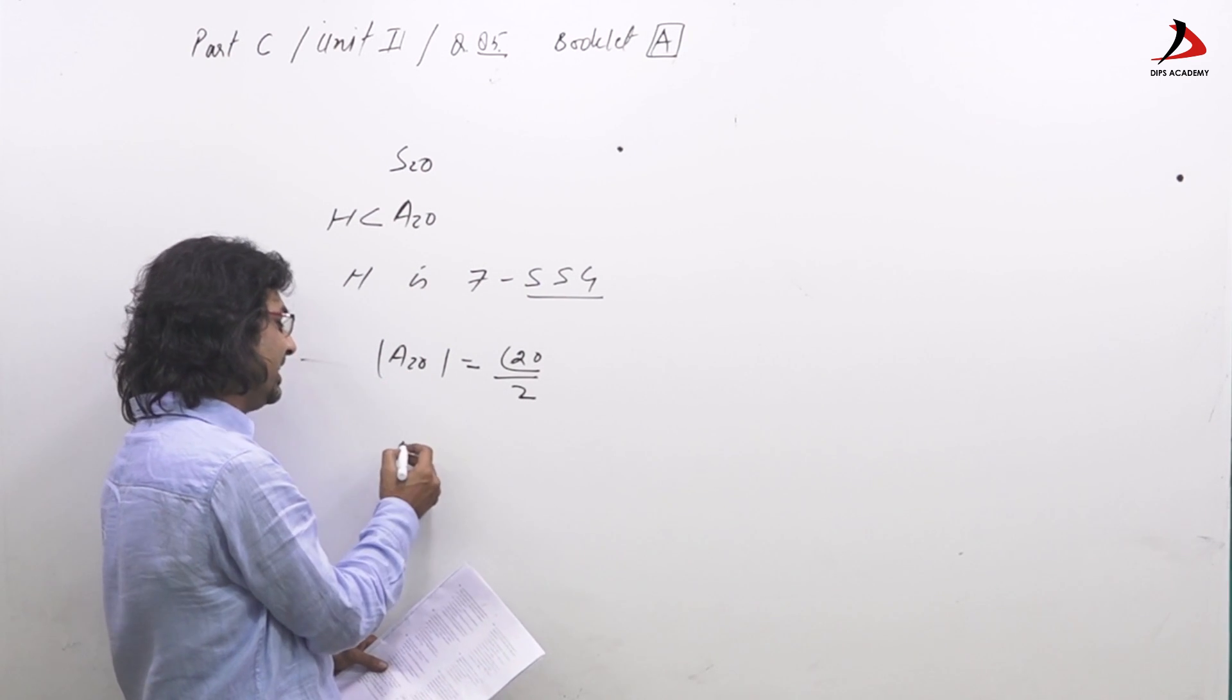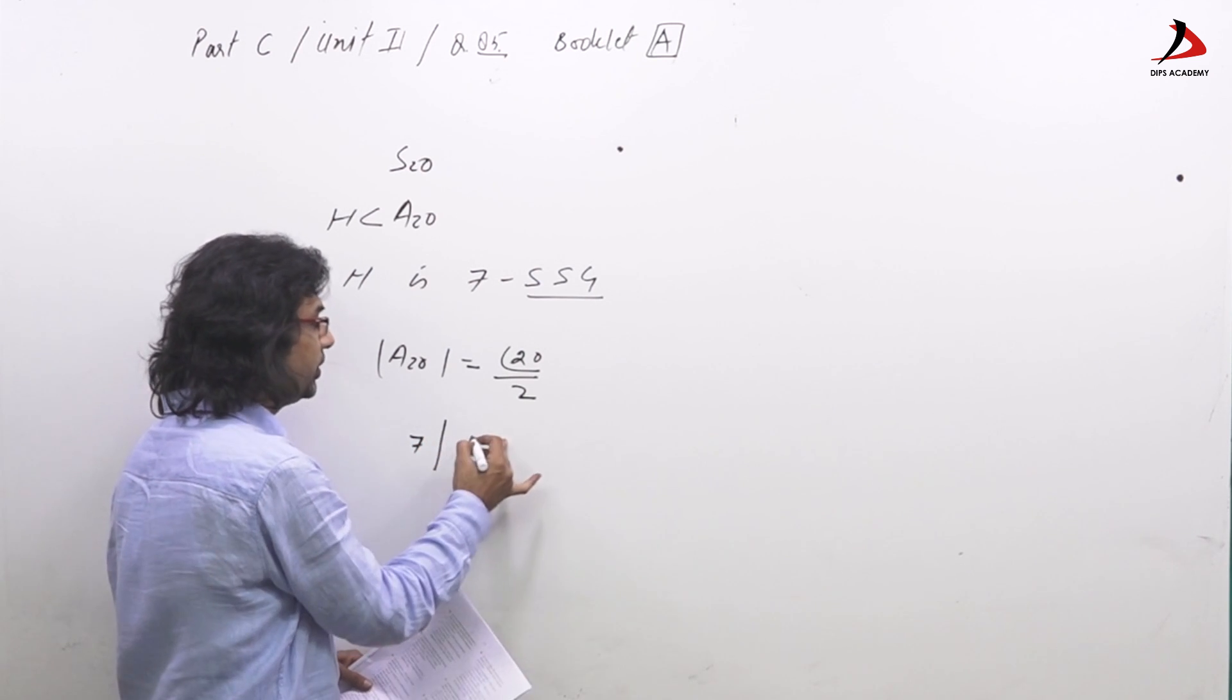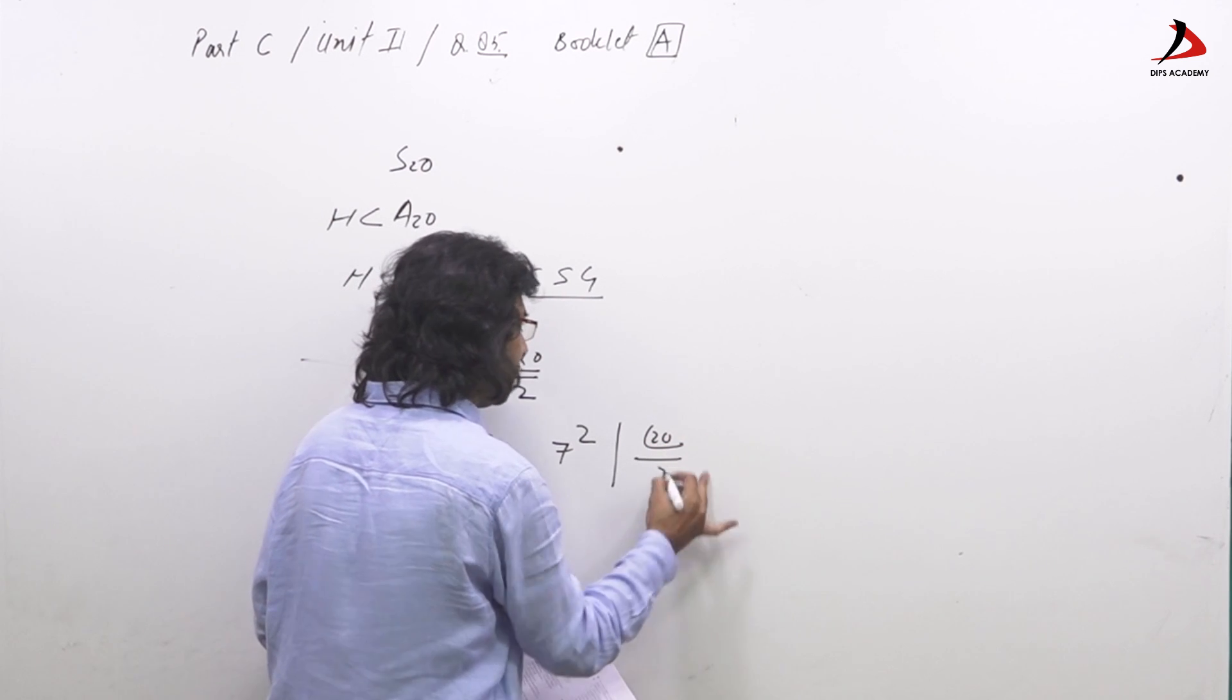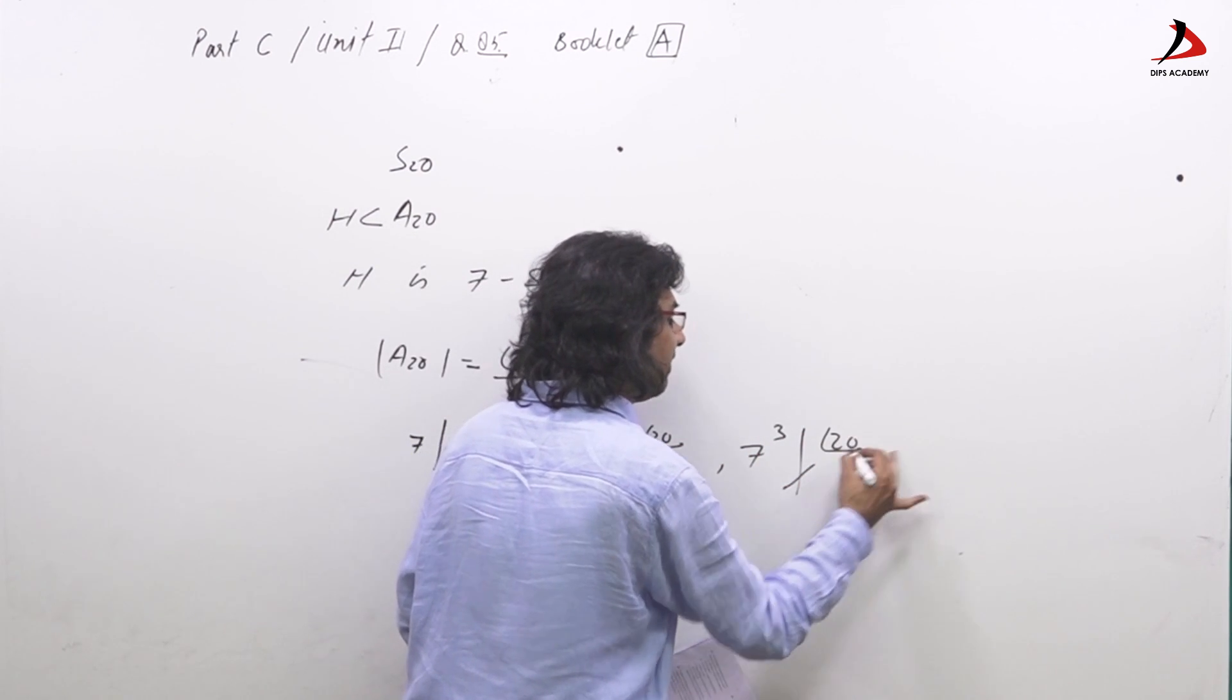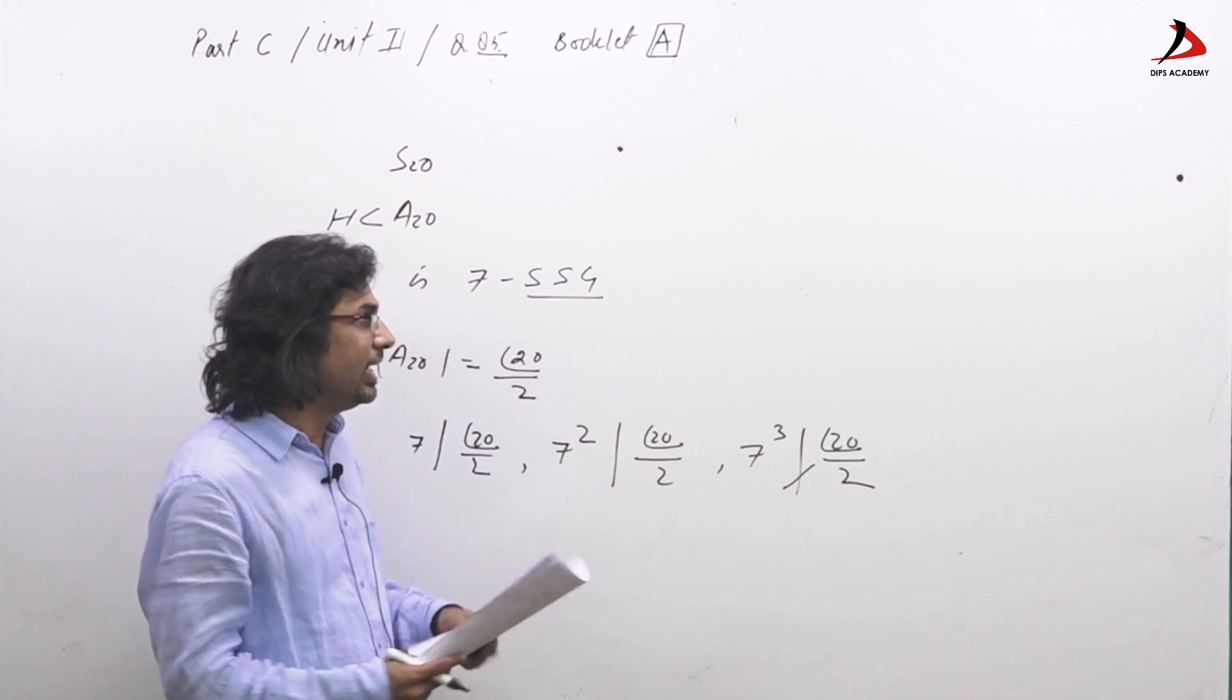Now we can easily see that 7 divides 20 factorial by 2, 7 squared divides 20 factorial by 2, but 7 cubed does not divide 20 factorial by 2.